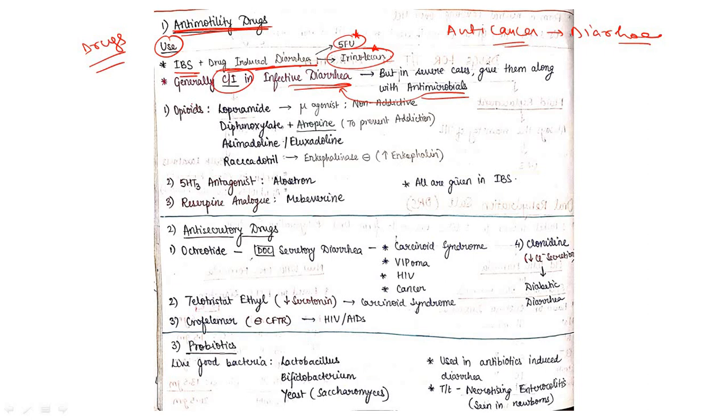Three groups come under this: opioids, 5-HT3 antagonists, then reserpine analogs. Opioids include loperamide, diphenoxylate, acemedoline, and racecadotril. Loperamide is a mu agonist and non-addictive in nature. Diphenoxylate is given along with atropine because diphenoxylate crosses the blood-brain barrier and can cause addiction.